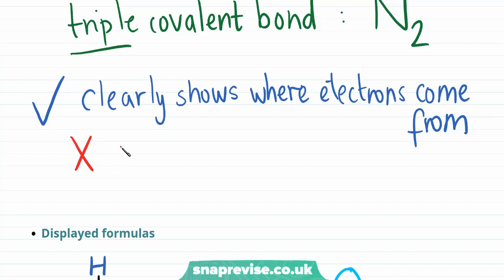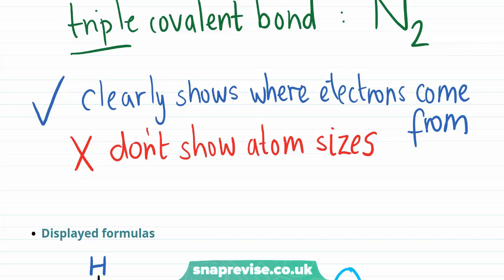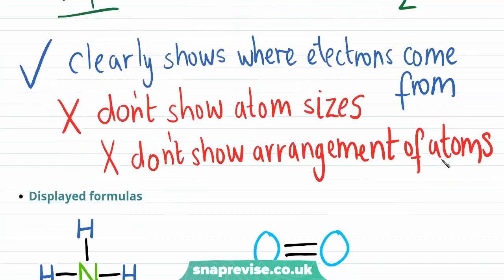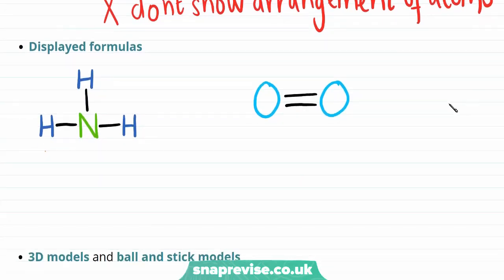However, there are two downsides to dot and cross diagrams. And the first one is that they don't show true atom sizes. This is because they are normally drawn in an almost cartoon form to make it clear. They also don't give any idea of the arrangement of atoms in space. So dot and cross diagrams aren't going to be perfect representation for a covalent bond.